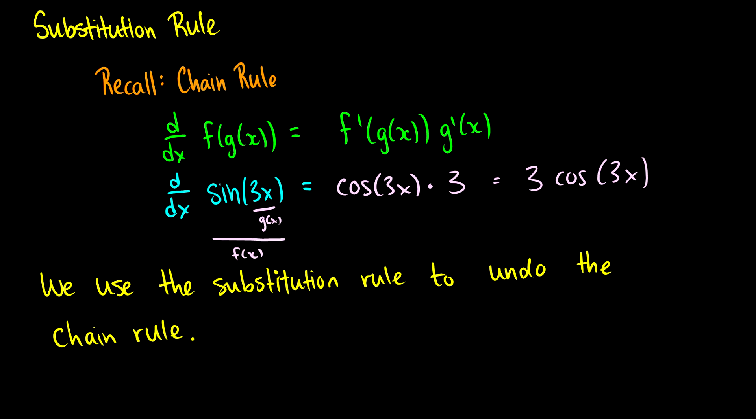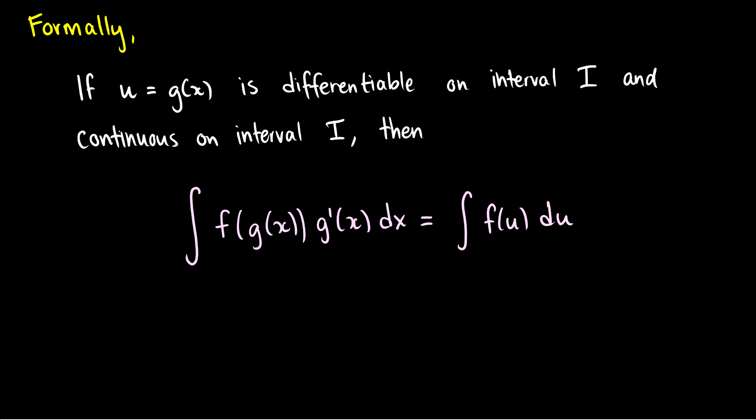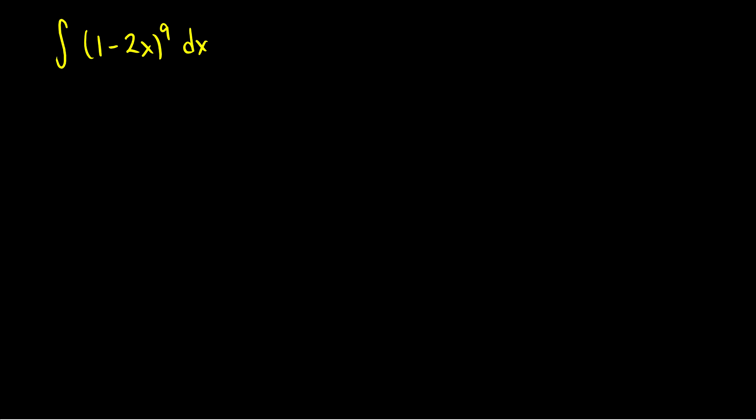As we can see, this is exactly what we wanted — sin(3x), with the constant being zero. So we can see this is a reversal of the chain rule. The substitution rule states formally: if u = g(x) is differentiable and continuous on an interval I, then the integral of f(g(x))·g'(x) dx equals the integral of f(u) du. Let's do more examples to get a grasp on how to apply this and what to pick as the substitution.